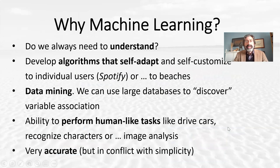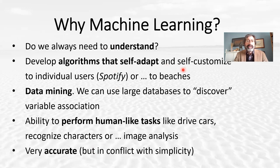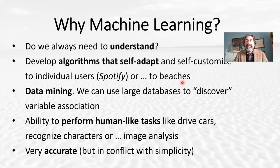Why do we use machine learning? Machine learning is not necessarily a tool that is useful to understand processes, but we don't always have to understand — sometimes we only need to predict, and machine learning are powerful predictors. Machine learning also allows for algorithms that self-adapt. Just think of Spotify self-adapting to its users, but we can think of algorithms that self-adapt to beaches and develop specific predictors for inundation or erosion using data for that specific site.